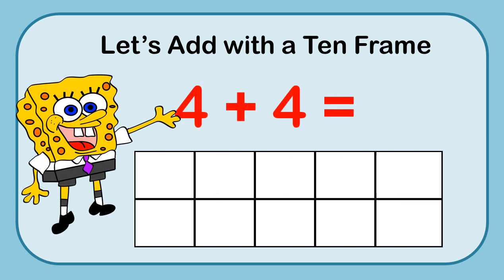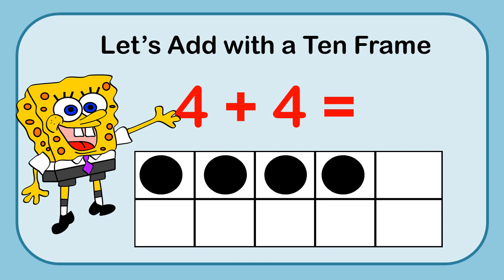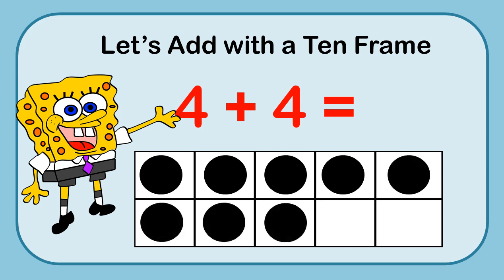Here's another problem: 4 plus 4. I'm going to put my 4 markers in there: 1, 2, 3, 4. And then 4 more: 1, 2, 3, 4. I could look at this using the 10-frame — there are 2 spots missing. Or I could say I have 5 on the top row and count up: 6, 7, 8. We're getting really good here. 4 plus 4 is 8.